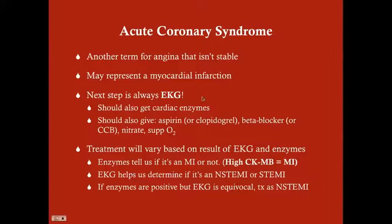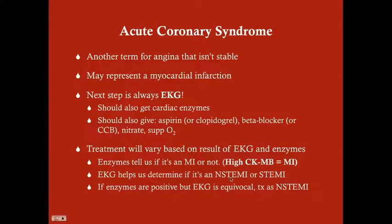Treatment varies based on EKG and enzymes. If enzymes are not elevated, there's no MI — just unstable angina. The EKG, combined with elevated enzymes, tells us whether it's NSTEMI or STEMI. NSTEMI is a partial occlusion causing superficial ischemia; STEMI is a total blockage causing transmural ischemia. STEMI shows ST elevation on EKG; NSTEMI does not. To confirm MI of either type, you need elevated CK-MB. If enzymes are positive but the EKG is equivocal, treat it as an NSTEMI.